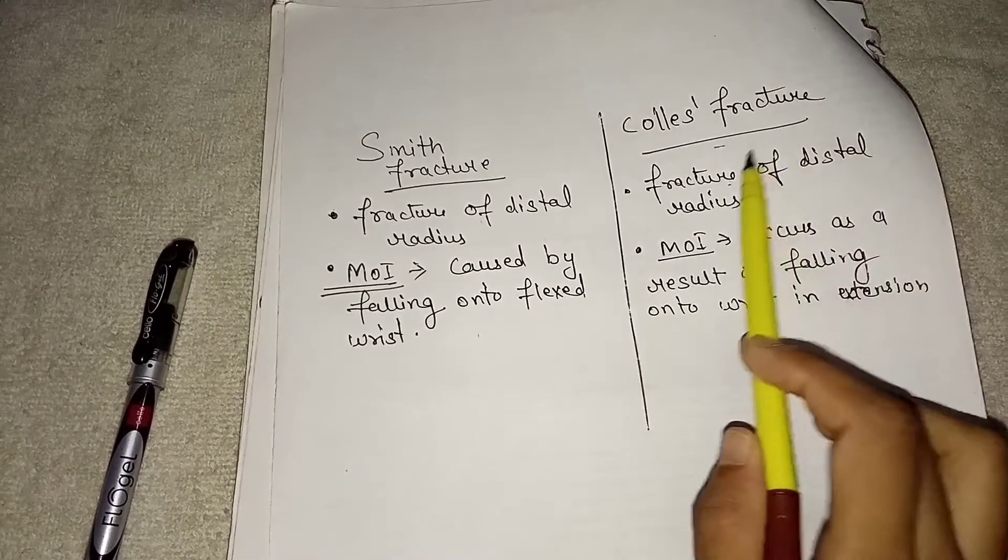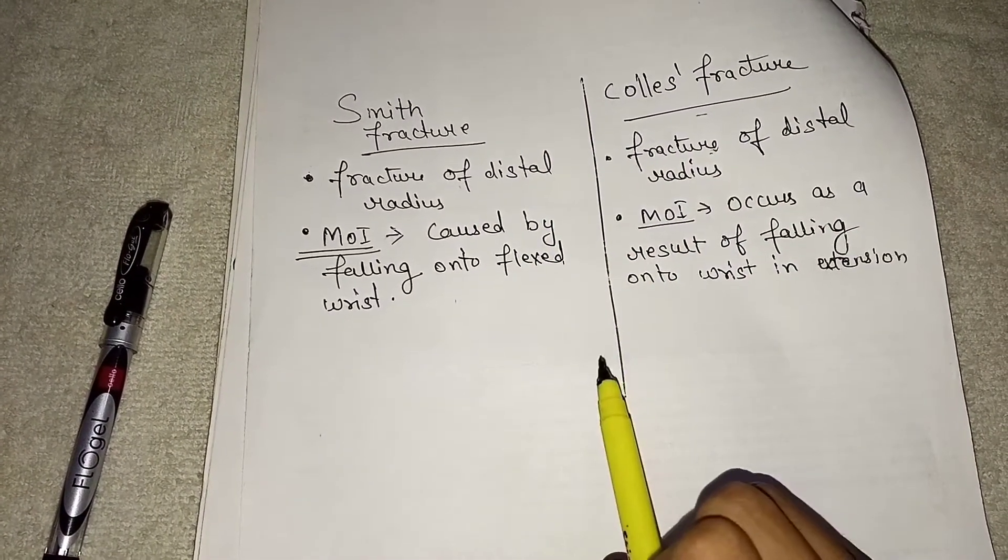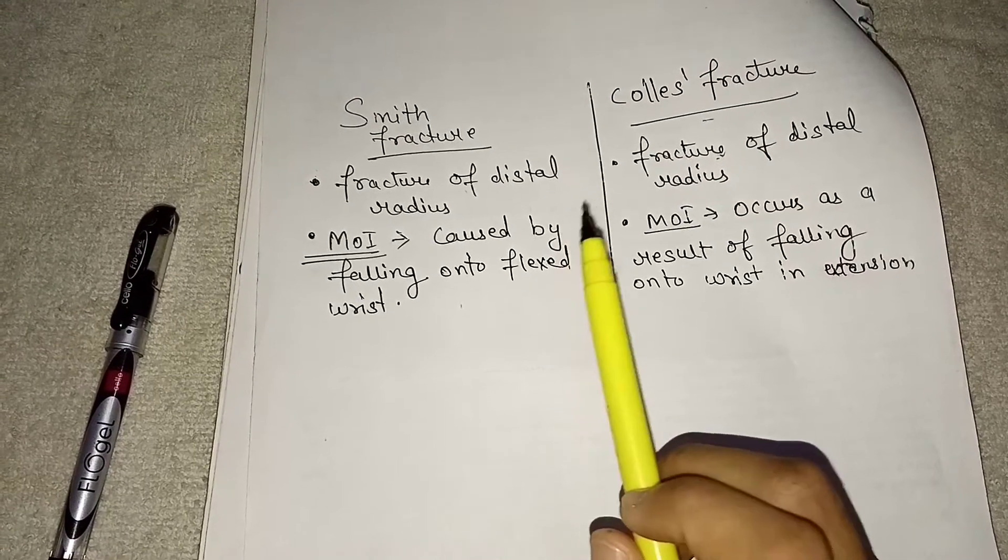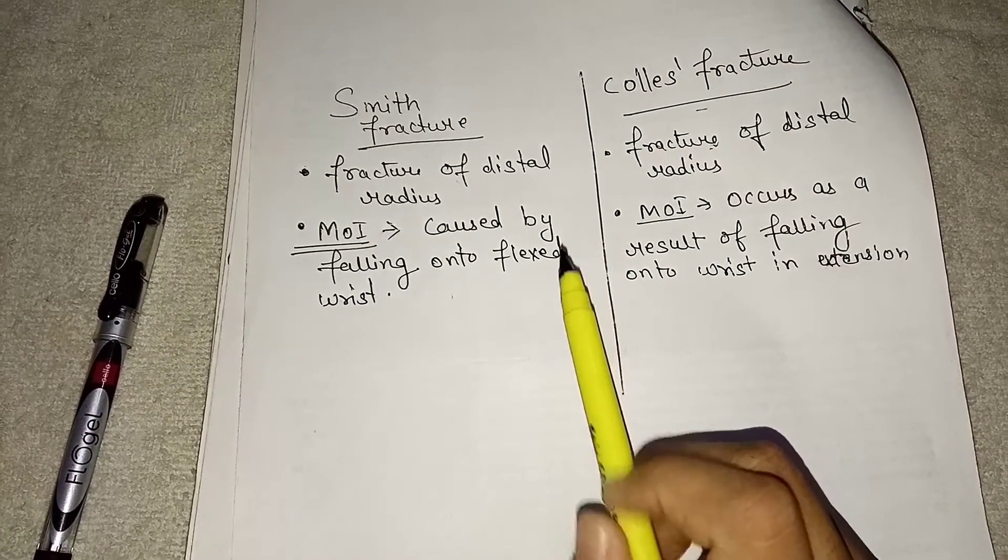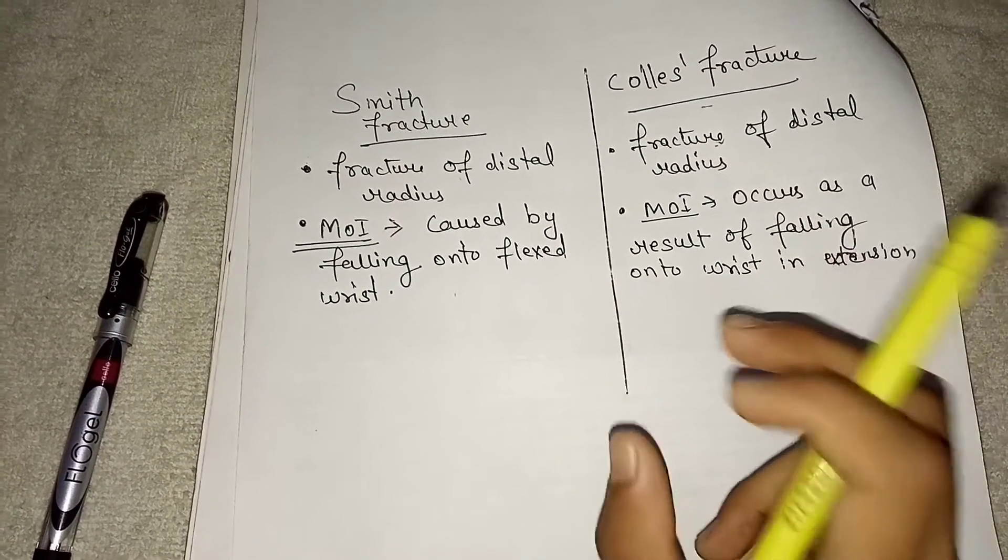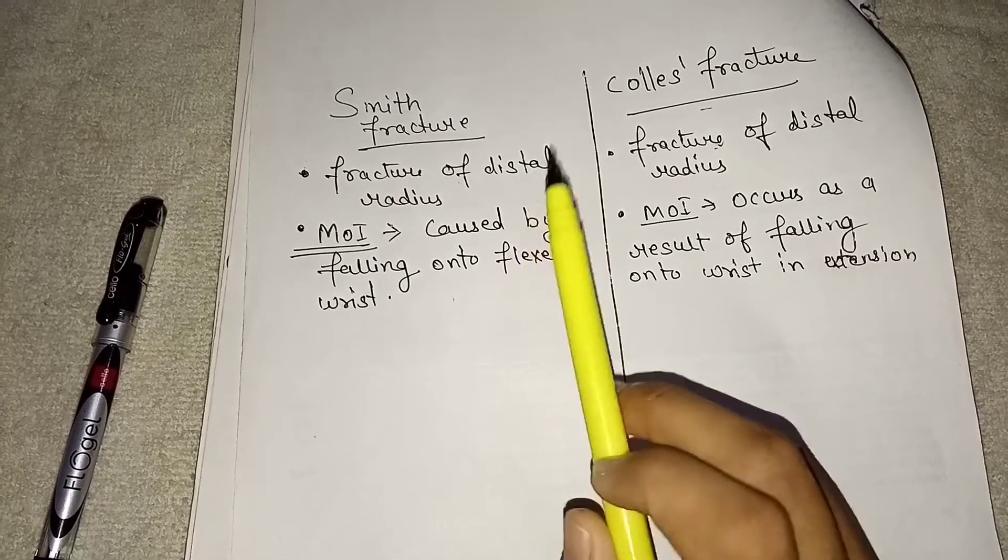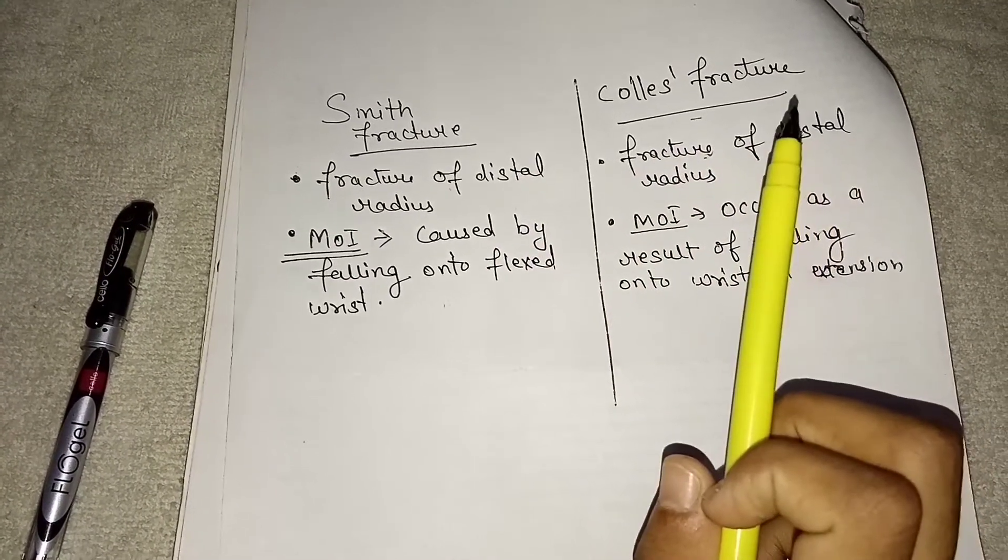Then Colles fracture is just opposite of the Smith fracture. And if I am talking about which fracture is more common, Smith fracture is less common than Colles fracture.